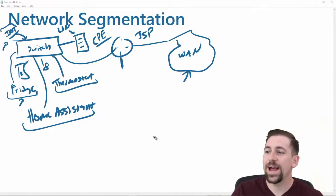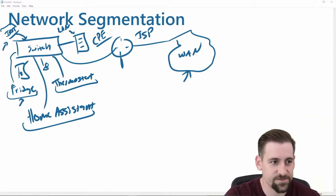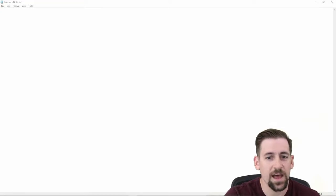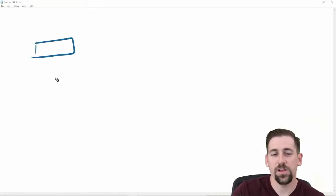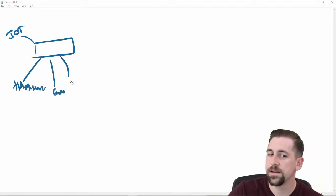Okay, so there's one way I could do this is I could have two physically separate networks. So I could take and plug all of these devices into a switch or a wireless access point, IoT devices, home assistant, camera, thermostat.